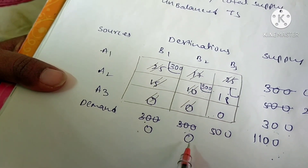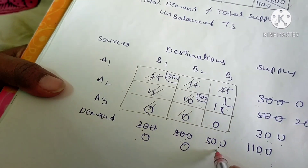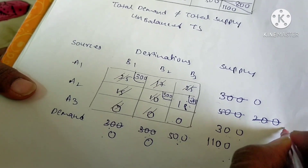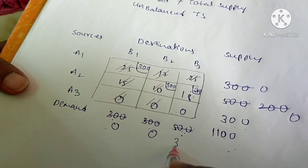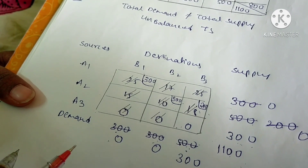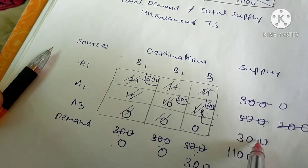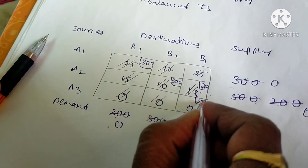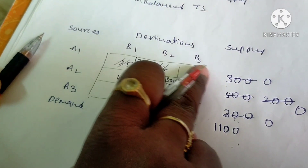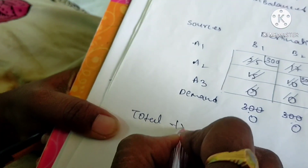Leave this complete column since we got zero there. From the corresponding row and column, the least number is 200. Write 200 here and deduct from both sides: 200 minus 200 equals zero, and 500 minus 200 equals 300. Leave that complete row. For the remaining allocation, select the least number from both sides — same number — allocate it, deduct from both sides, and we get zero. All elements are now allocated.